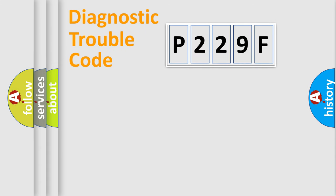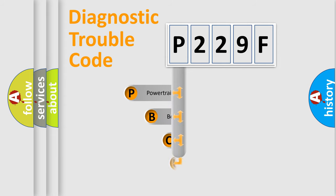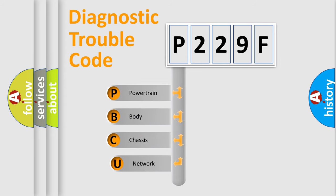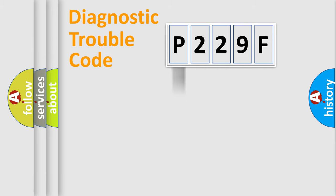Let's do this. First, let's look at the history of diagnostic fault code composition according to the OBD2 protocol, which is unified for all automakers since 2000. We divide the electric system of an automobile into four basic units: Powertrain, Body, Chassis, and Network.